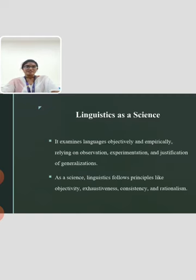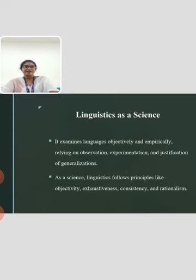The next topic is Linguistics as a Science. As Linguistics is the scientific study of language, it examines languages objectively and empirically, relying on observation, experimentation and justification of generalizations. As a Science, Linguistics follows principles like objectivity, exhaustiveness, consistency and rationalism. Moreover, Linguistics is the science of language and linguists are scientists who apply the scientific method to questions about the nature and function of language.